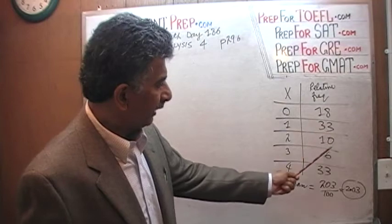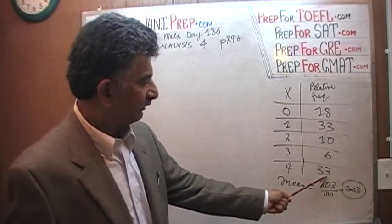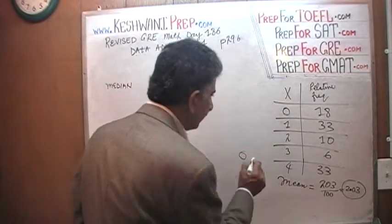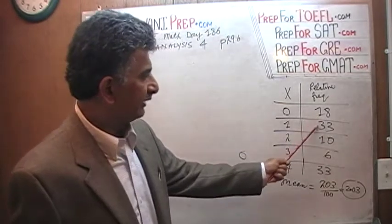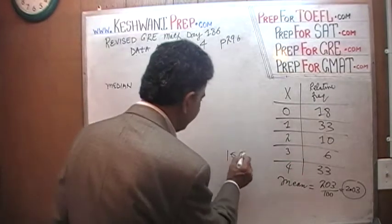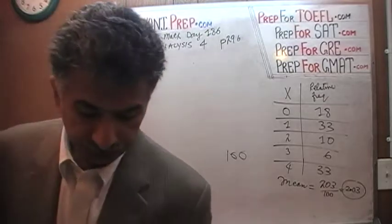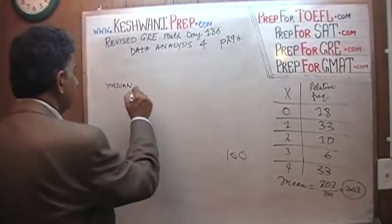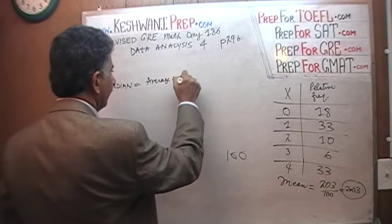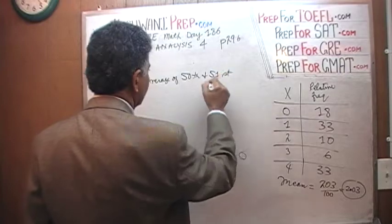Let's verify: 18 plus 33 plus 10 plus 6 plus 33. 8 plus 3 is 11, 11 plus 6 is 17, 17 plus 3 is 20 — carry 2. Then 2 plus 1 is 3, 3 plus 3 is 6, 6 plus 1 is 7, 7 plus 3 is 10. It adds up to 100. Therefore, the median is going to be the average of the 50th and 51st observations.